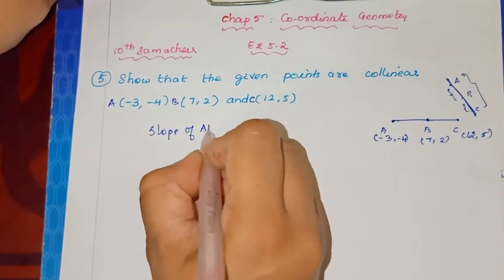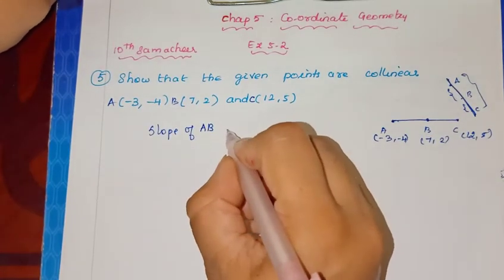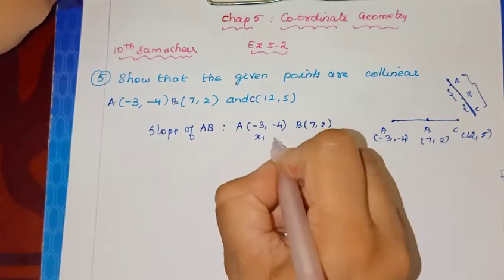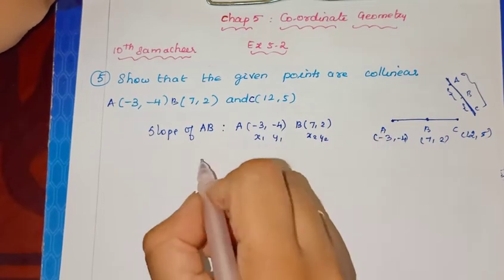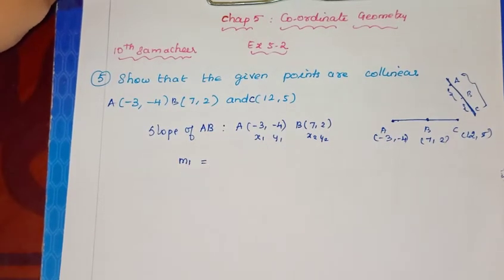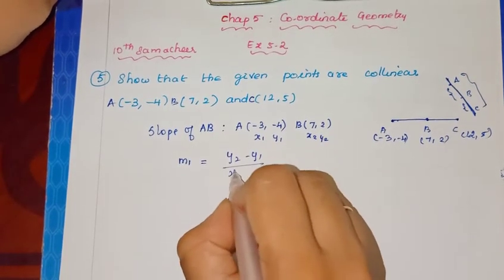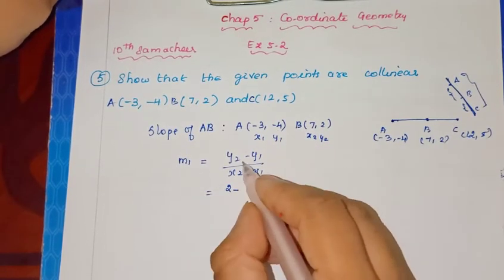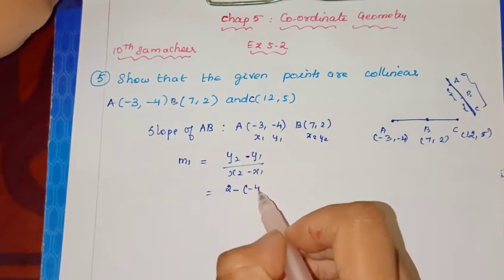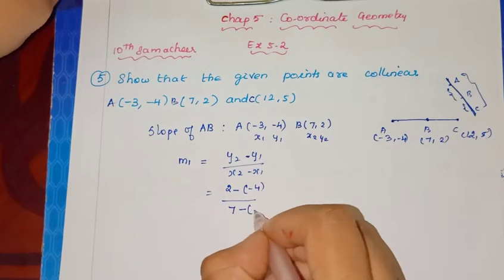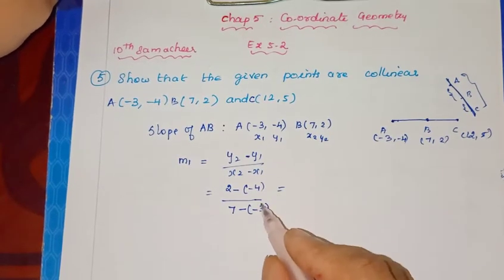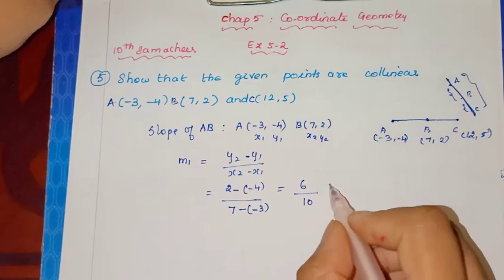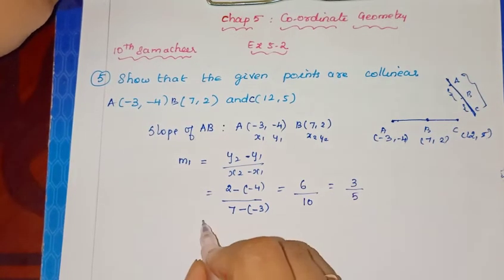Now slope of AB: we have points A(-3, -4) and B(7, 2). So this is x1, y1, this is x2, y2. Slope of AB: formula is y2 minus y1 by x2 minus x1. So y2 is 2, 2 minus (-4), by x2 which is 7 minus (-3). So 2 minus (-4) is 6, and 7 plus 3 is 10. So 6 by 10. Simplifying, m1 equals 3 by 5.